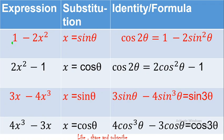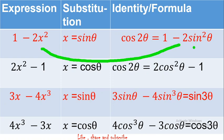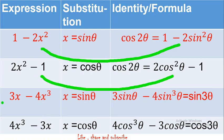If you see an expression like 1 − 2x², just forget about the substitution for a moment and compare it with the double angle formula cos 2θ = 1 − 2sin²θ. Yes, it matches — so the substitution is x = sinθ. Similarly, for an expression 2x² − 1, compare it with the formula cos 2θ = 2cos²θ − 1, and the substitution is x = cosθ. Whatever substitution is needed, it will always come from the identities you have studied — nothing out of the box.